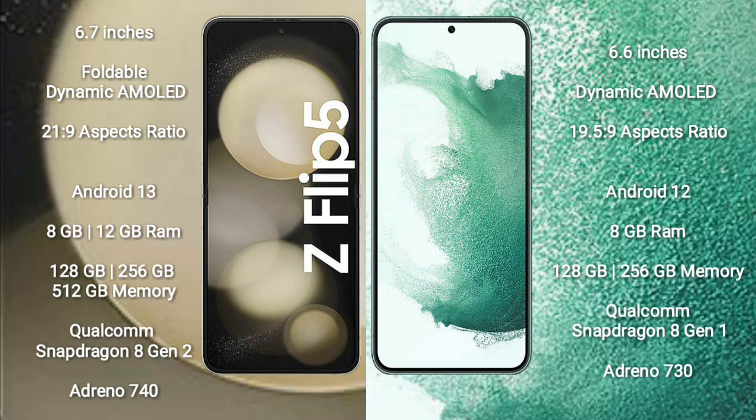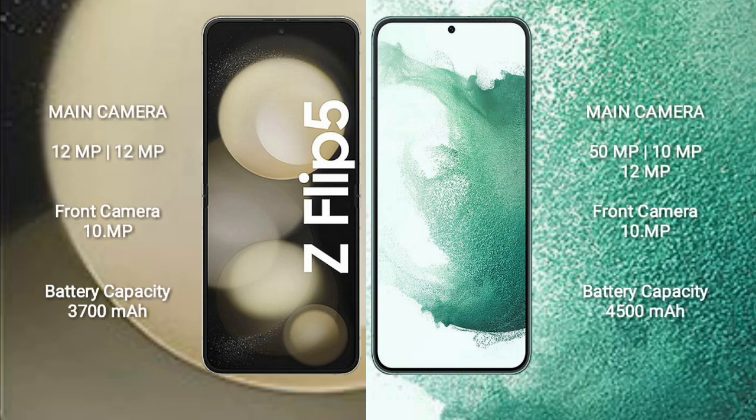Samsung Galaxy Z Flip 5 comes with 8GB or 12GB RAM and 128GB, 256GB, or 512GB internal storage, with a Qualcomm Snapdragon 8 Gen 2 Plus processor and GPU Adreno 740. Samsung Galaxy S22+ comes with 8GB RAM and 128GB or 256GB internal storage, with a Qualcomm Snapdragon 8 Gen 1 processor and GPU Adreno 730.